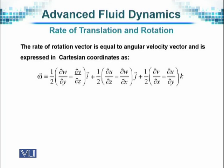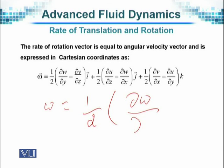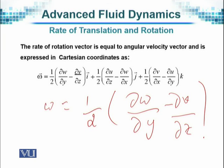If the motion is only in the X direction, for example, the vorticity vector reduces to half of the partial derivative of W with respect to Y minus the partial derivative of W with respect to Z. The other components reduce to zero.